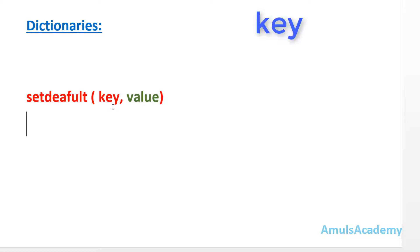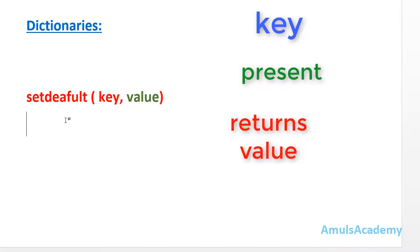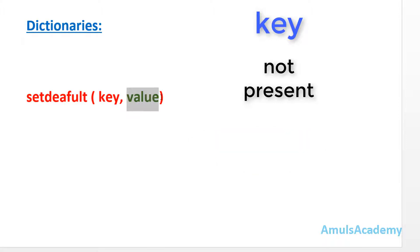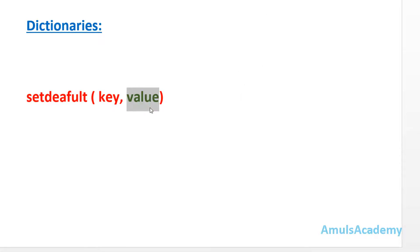This setDefault method will check for the key. If that key is present then this method will return the value of that key. If that key is not present then it will add that key to the dictionary. If you mention the value, it will add the key-value pair; if you didn't mention the value, then it will add None as the value for that key.